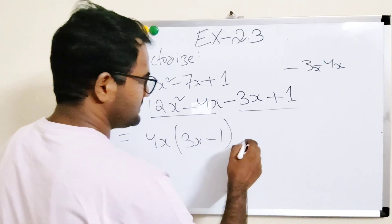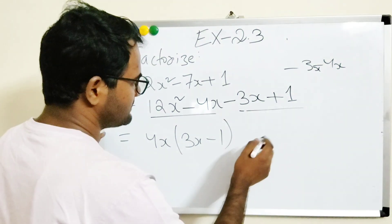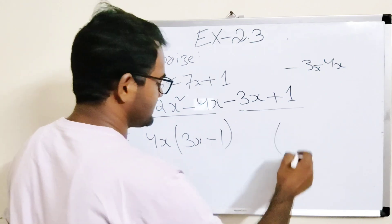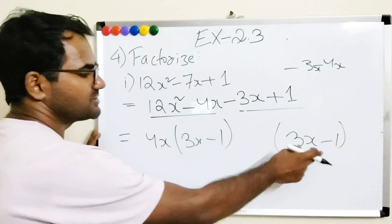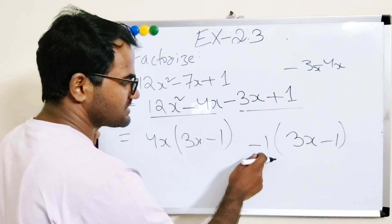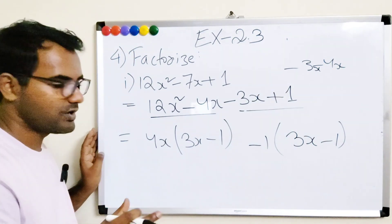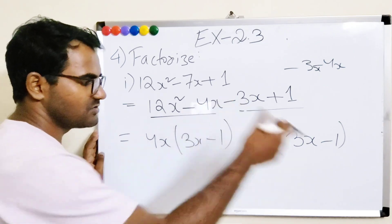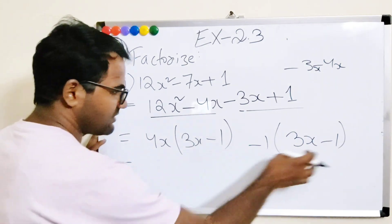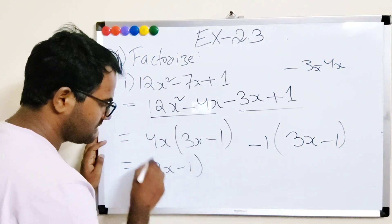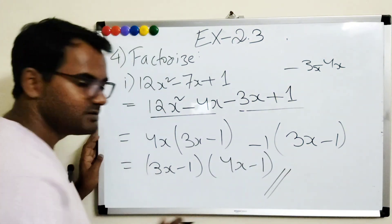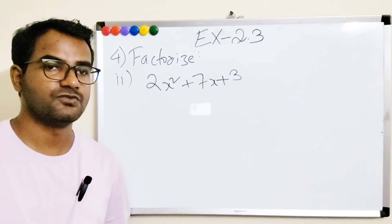From the last two terms, minus 3x plus 1, nothing obvious is common, so we take minus 1: minus 1(3x minus 1). You can close your eyes and write the same bracket as the first group — it will be exactly the same. So the final answer is (4x minus 1)(3x minus 1).